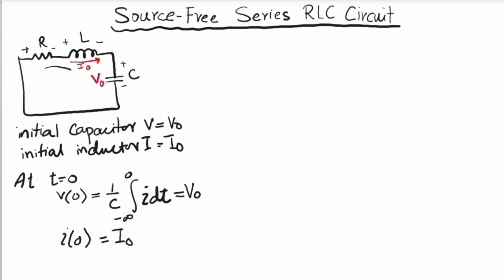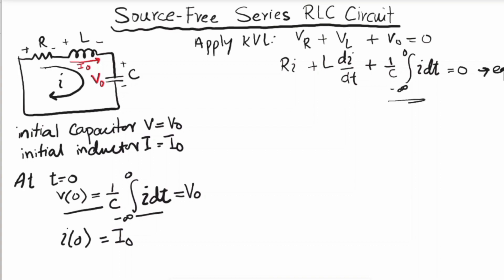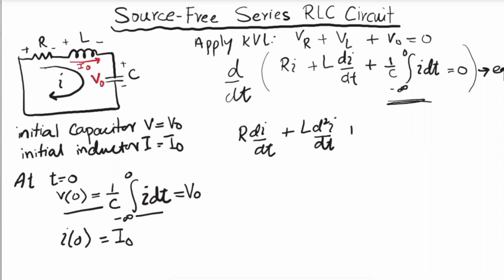Applying KVL to this loop with current i, starting from the resistor: VR + VL + VC = 0. By Ohm's law, this becomes iR + L·di/dt + (1/C)∫i·dt = 0, which we call equation one. To remove the integral, we take the derivative with respect to time, giving R·di/dt + L·d²i/dt²+ (1/C)·i = 0.